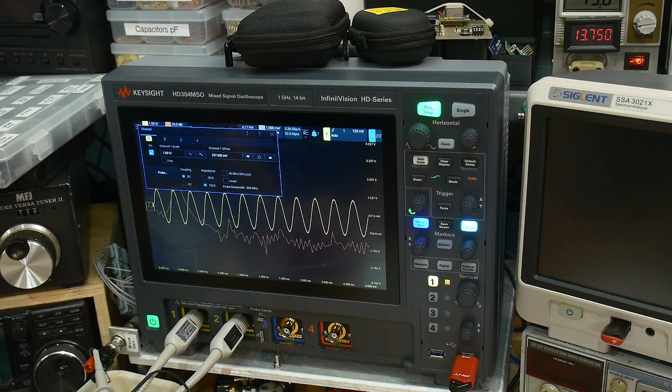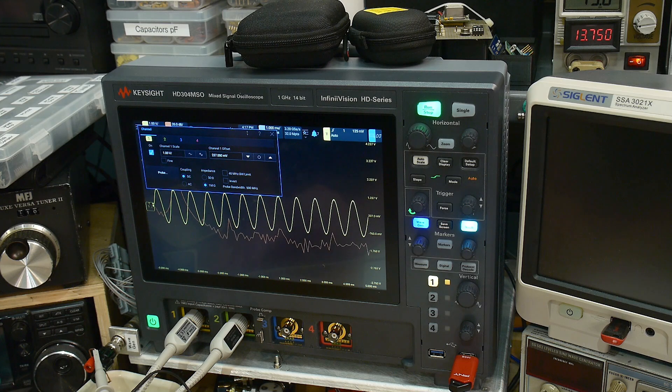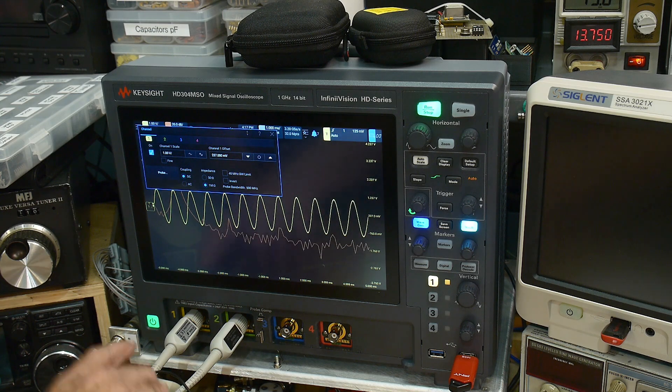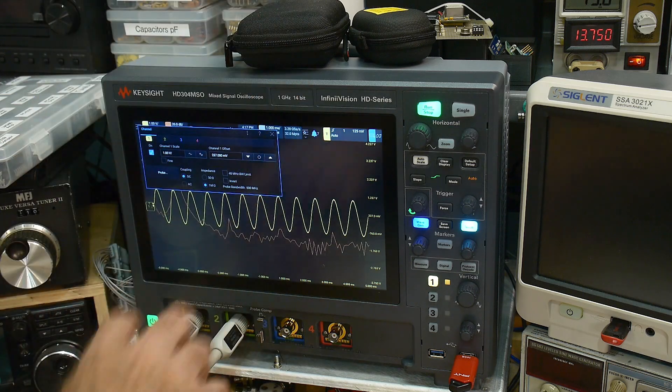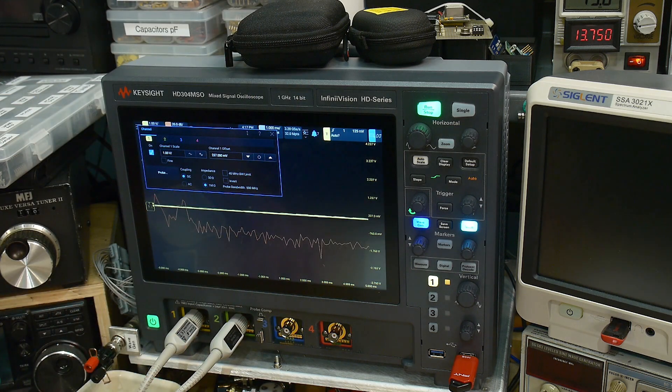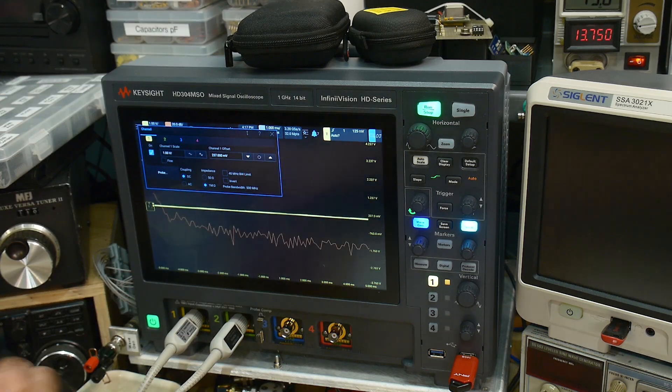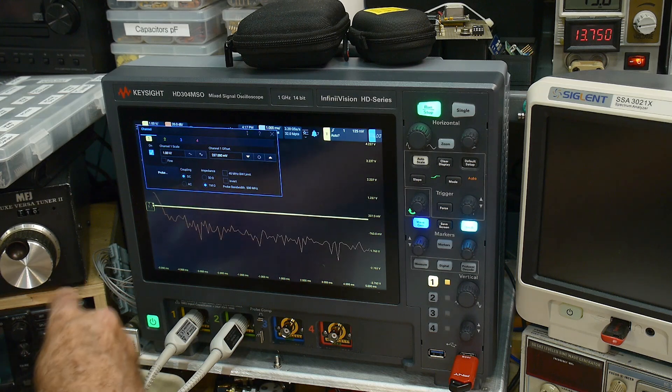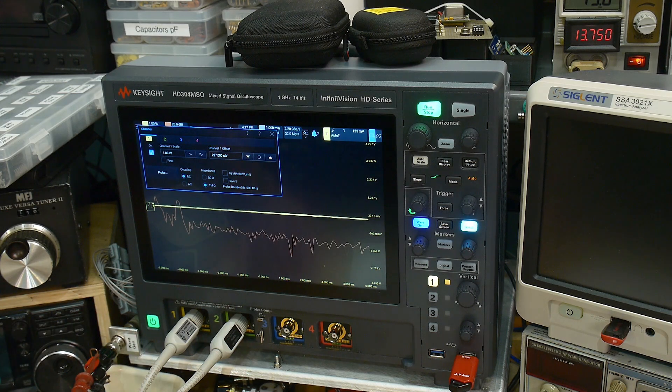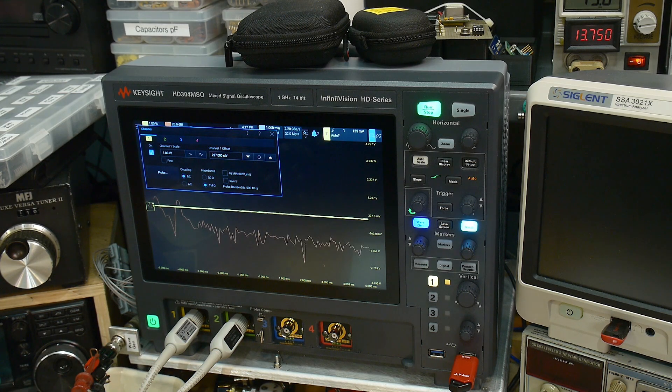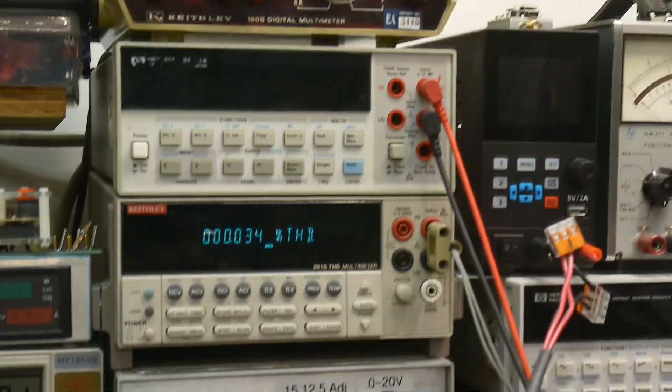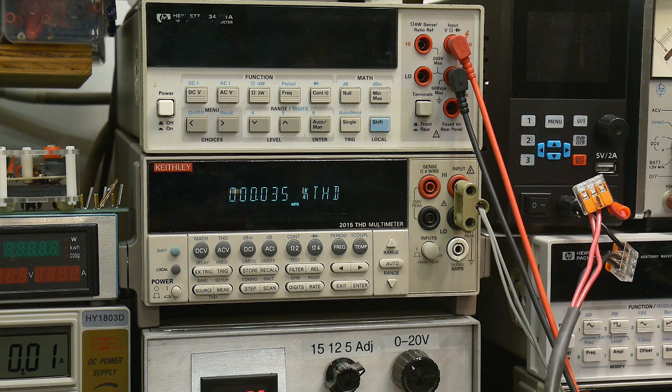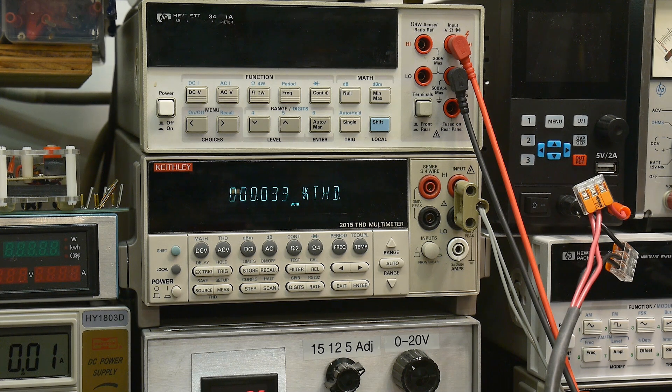Now this is direct digital synthesis and everything, probably 16-bit. So let's measure this with the Keithley. We'll connect the Keithley up to this and then we will go look at the Keithley. And we're getting 0.03 percent, so much much better, much much much better.